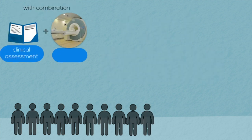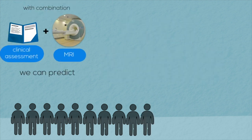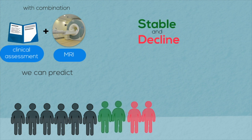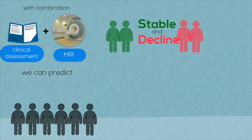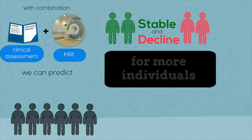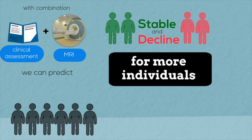We can then get an MRI scan of the remaining individuals and quantify the brain atrophy pattern. This provides additional clues for future symptomatic decline for a few more individuals, as shown by the additional green and red figures in the diagram. However, a large number of unpredictable individuals still remain.